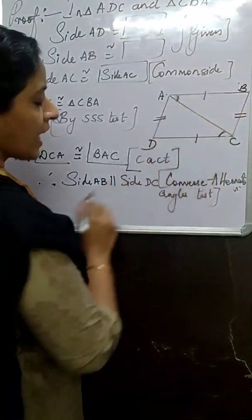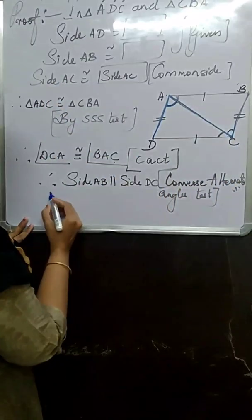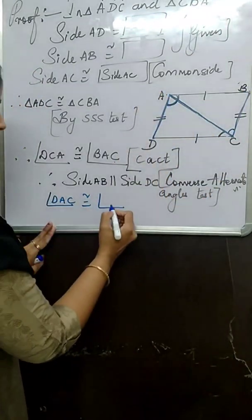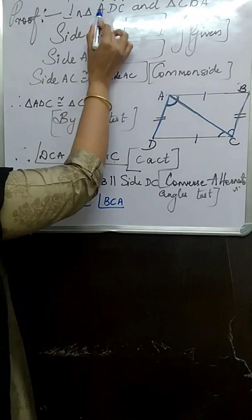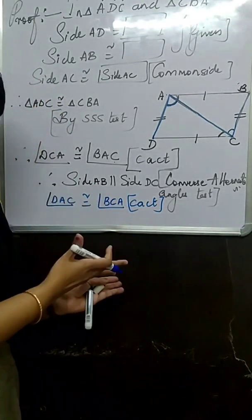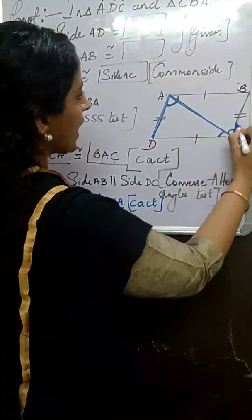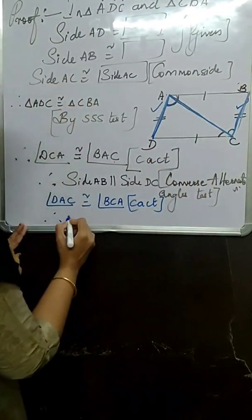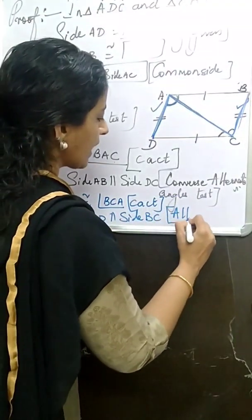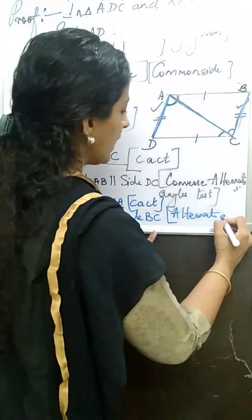Similarly, consider the next pair of alternate angles: angle DAC congruent to angle BCA, reason: CPCT. These two angles are also alternate angles. Therefore, side AD is parallel to side BC, by the converse of alternate angles test. For 9th standard, even if you don't write 'converse,' you can write 'alternate angles test' — no problem, marks will be given. But do write this step.